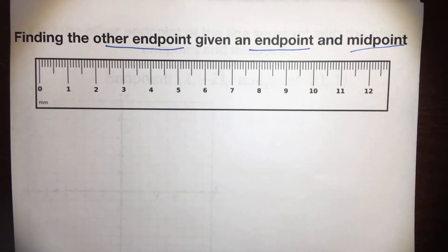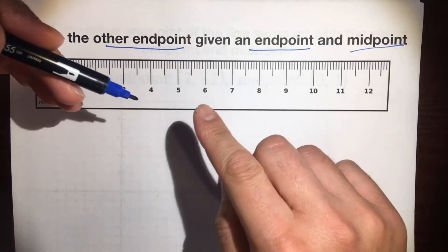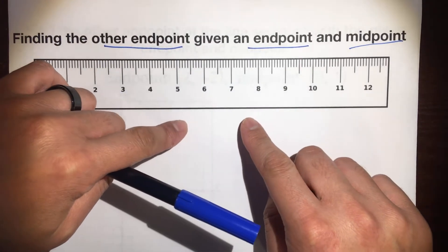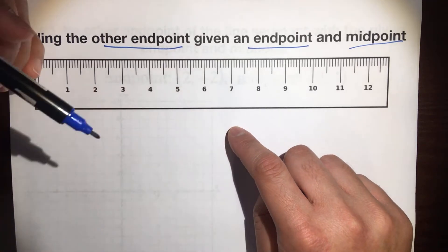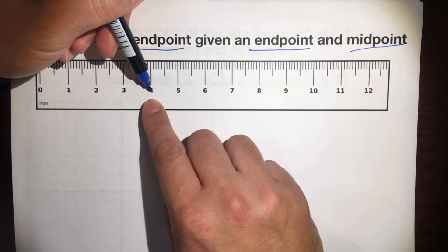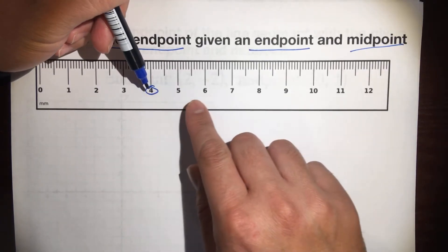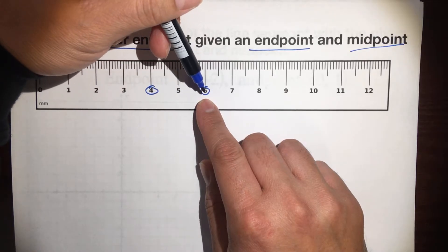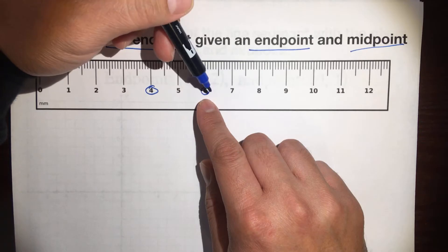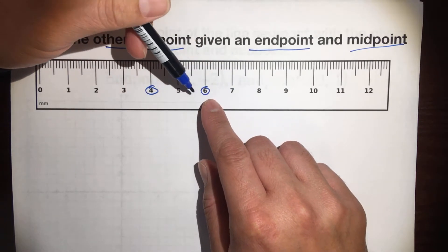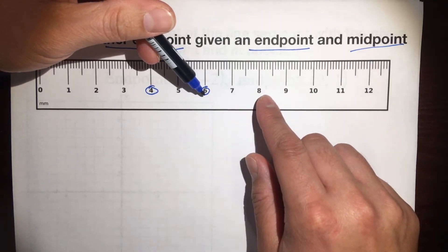Okay, so here's what we're going to do. Here's the situation. In the previous video, you had two endpoints, and you had to find where the two friends would meet in the middle. So in this video, you're given you, let's say at 4, and the midpoint is at 6, and you want to know where your friend would start off at to meet you at 6. So here's your starting point, here's where you would end up — where is your friend at right now?